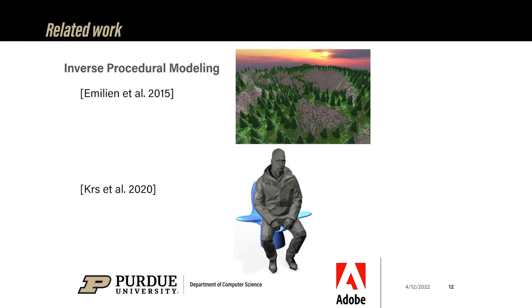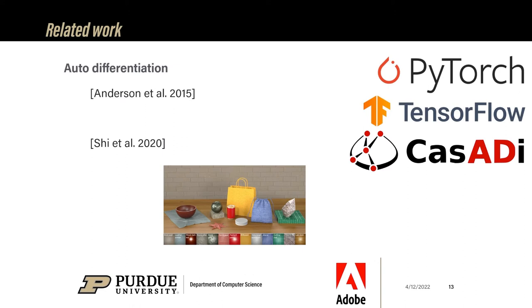The second category of related work is inverse procedural modeling, where the goal is to find a procedural model that fits an existing geometry. One paper is about interactive editing of a procedural model; another from our team tries to use a genetic algorithm to create a node-based procedural model — our method is similar but focuses on local edits. The third category is autodifferentiation. Our system uses CasADi, but PyTorch and TensorFlow are also extensively used frameworks. A method called MATCH can automatically convert a photo to a procedural material graph using autodifferentiation.